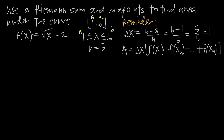We'll be plugging Δx into our area formula. Now we need to find the values f(x₁), f(x₂), ..., f(xₙ). In order to find those, we first need to find x₁, x₂, ..., xₙ. To do that, let's take a look at our curve to see what we're actually working with.